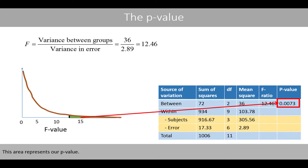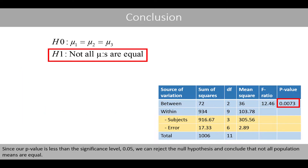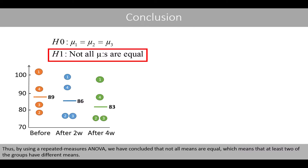This area represents our p-value. Since our p-value is less than the significance level 0.05, we reject the null hypothesis and conclude that not all population means are equal. Thus, by using a repeated measures ANOVA, we have concluded that not all means are equal, which means that at least two of the groups have different means.